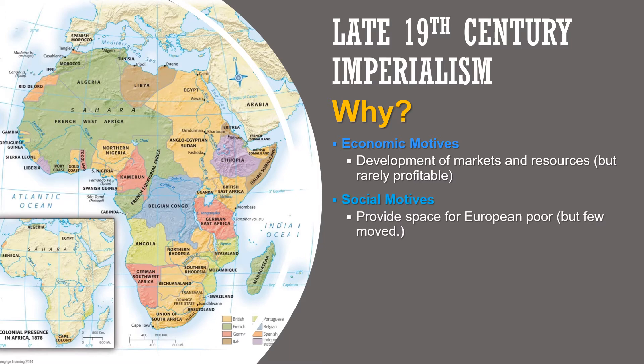There's also a certain amount of social motives. Europeans at the time had expanding populations, and there were arguments publicly that creating overseas empires would provide space for European poor people to move. The reality is that most of these places already had plenty of people living in them, and very few Europeans actually moved into these regions — South Africa being one of the exceptions. Above and beyond, probably the biggest reason why imperialism takes place is nationalistic motives — competition between the different countries. Whether it makes sense or is economically viable doesn't matter; everyone wants their own empire and wants to get in on the action.